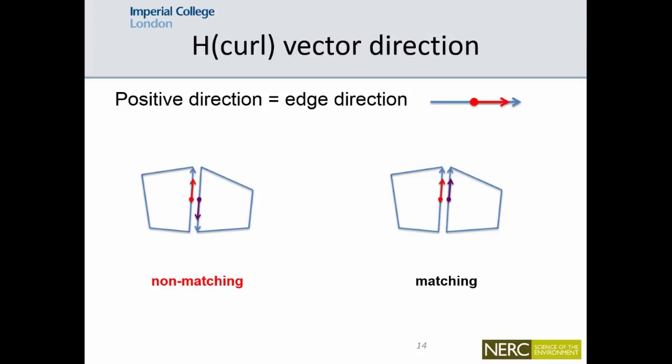And there is a similar problem, but now for what the value means. So here we have an Hcurl function space, where a value in the node means a vector. And if we have the convention that the vector's positive direction is to point along the orientation of the edge, then again, if we have a mismatch, that will cause problems.